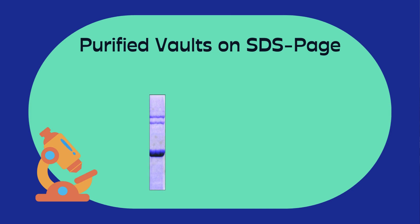Let's look at what happened when we analyzed purified vaults on SDS-PAGE. We saw three large proteins. The reason we could see the proteins on the gel is because we stained the gel with a blue stain called Coomassie Blue. This stain binds to proteins. As you just learned, larger proteins are found toward the top of the gel, and there were three dark bands, indicating that vaults were simply composed of three different proteins. However, all three of the proteins were larger than average. The sizes of the proteins were estimated by comparing how far they migrated in the gel to proteins of known size.